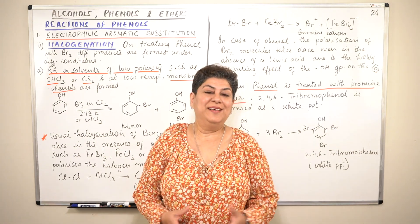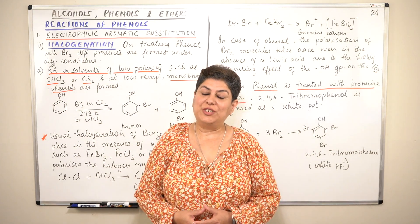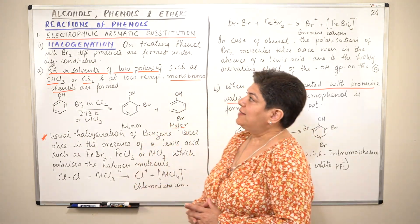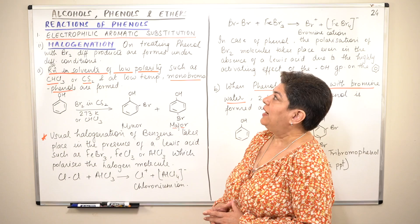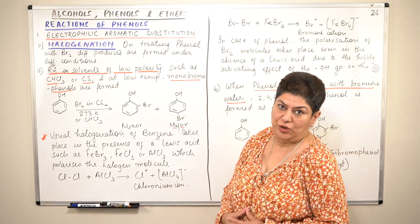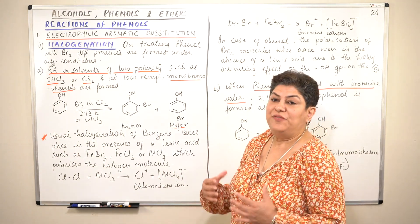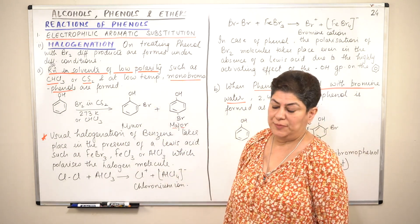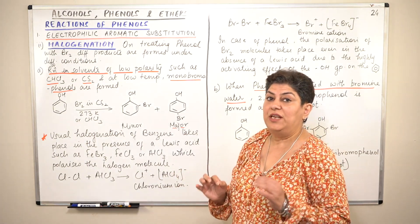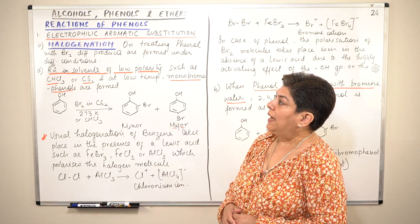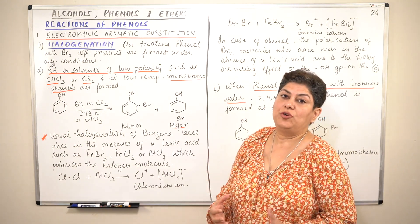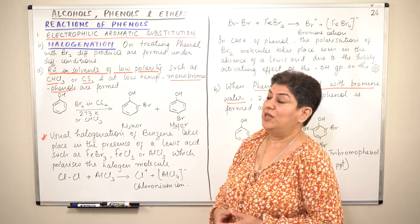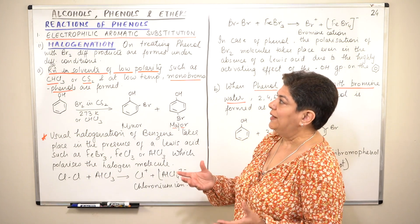Hello, I am Seema and welcome to part 24 of the chapter Alcohols, Phenols and Ethers. In the previous video, I started talking about the electrophilic aromatic substitution reactions in the case of phenols. This was the first category of reactions that we were discussing in reactions of phenols. Under this, I explained nitration of phenols to you. In this video, we are going to be talking about the second type of electrophilic aromatic substitution, which is halogenation. So let us start.